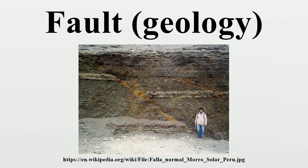A special class of strike-slip faults is the transform fault, where such faults form a plate boundary. These are found related to offsets in spreading centers, such as mid-ocean ridges, and less commonly within continental lithosphere, such as the Dead Sea Transform in the Middle East or the Alpine Fault in New Zealand. Transform faults are also referred to as conservative plate boundaries, as lithosphere is neither created nor destroyed.